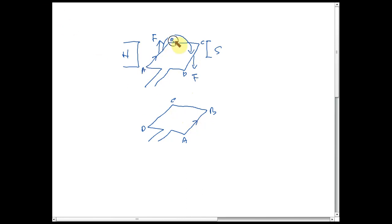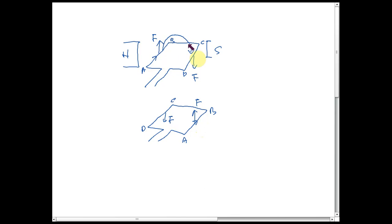If the current still flows in the same direction from A to B after the half turn, it will produce a force upwards on one side and downwards on the other side. Initially there is a force upward on the left-hand side, but after a half rotation there is a force upward on the right-hand side. This means the coil will not rotate continuously — it will oscillate, going right and coming back repeatedly.